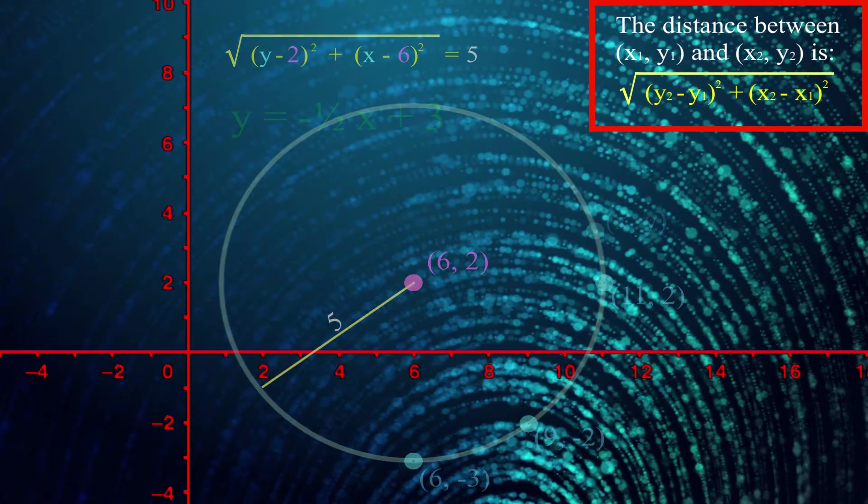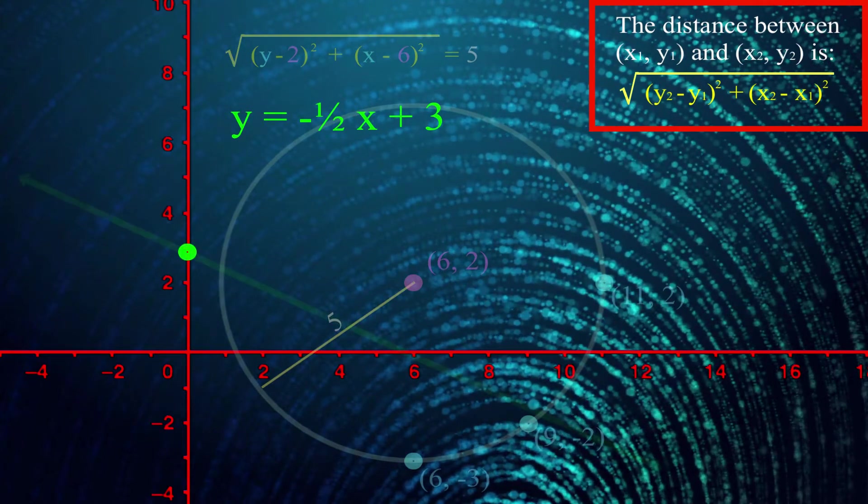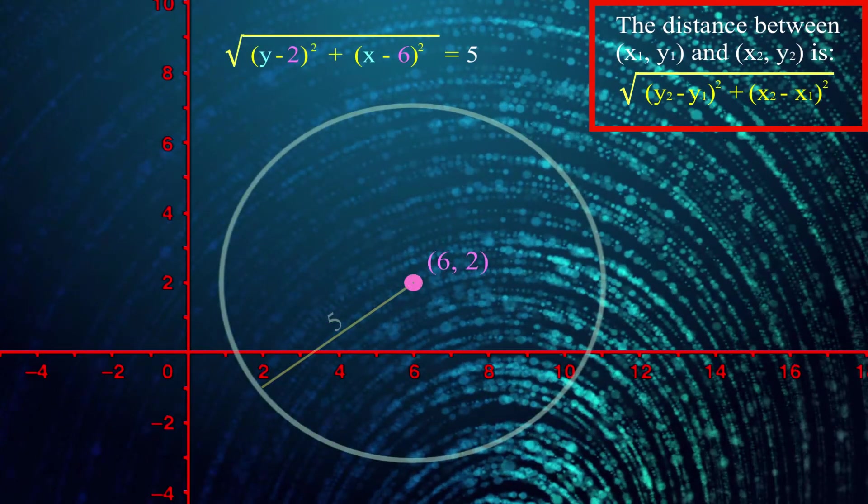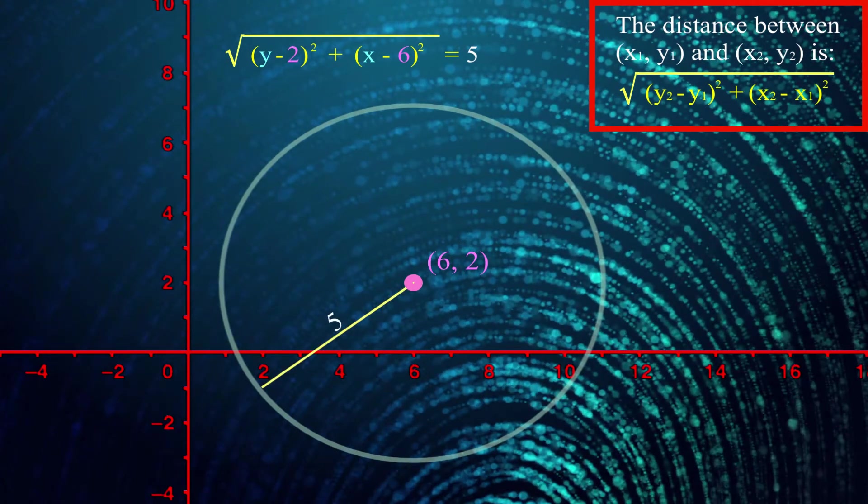What I'm saying is just like this is the equation of a line with a y-intercept of 3 and a slope of negative 1 half, this is the equation of a circle centered at (6, 2) with a radius of 5.